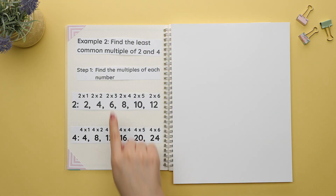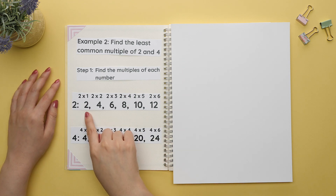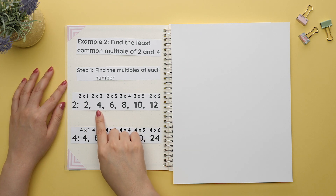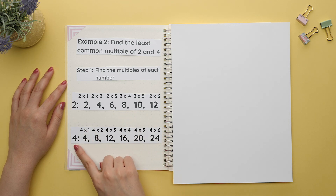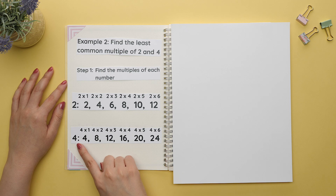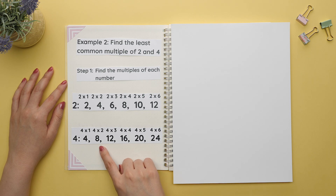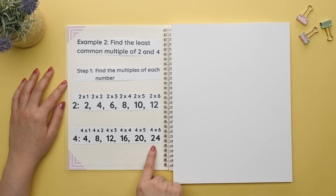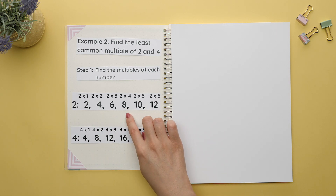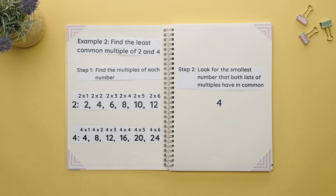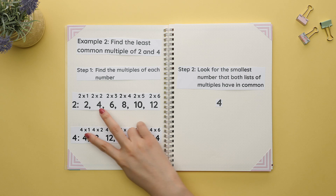We'll start with finding the multiples of each number. For two: 2, 4, 6, 8, and so on. Do the same for four: 4, 8, 12, 16, and so on. Both lists have a four and an eight, but we are looking for the smallest number that both lists have in common. Therefore our least common multiple is four.